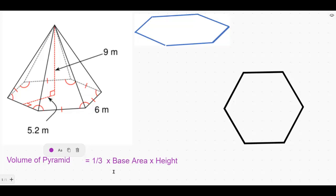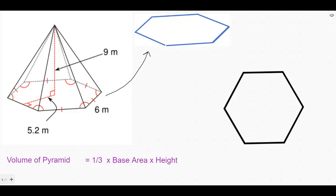First, we have to find the base area. As the base is a regular hexagon, I have redrawn this base over here. This is a 3D diagram, and this is the side view of the pyramid. When you look from the side view, the regular hexagon looks like this. This is the 2D view — the two-dimensional view when we see the hexagon from the top of the pyramid. This regular hexagon has a side of 6 meters on all sides. A regular hexagon is a polygon whose all sides and all angles are equal. Therefore, all the sides are 6 meters.